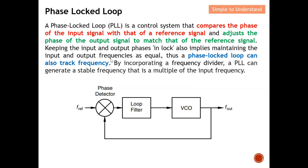A Phase-Locked Loop can also track frequency. By incorporating a frequency divider, a Phase-Locked Loop can generate a stable frequency that is a multiple of the input frequency. We are going to take a closer look at this later on from the frequency synthesizer perspective.